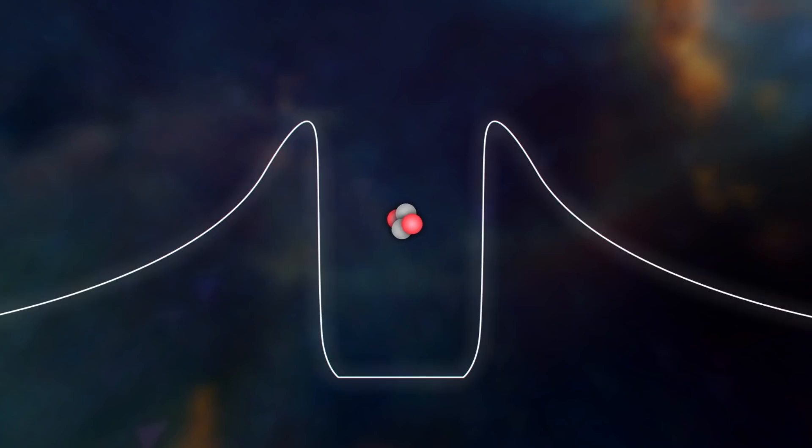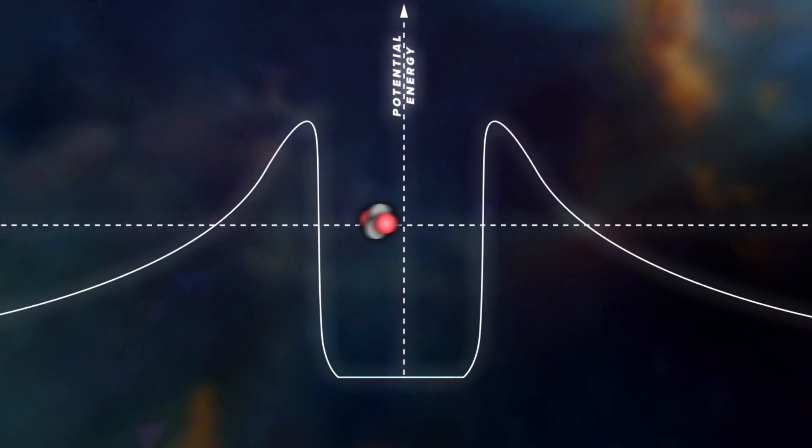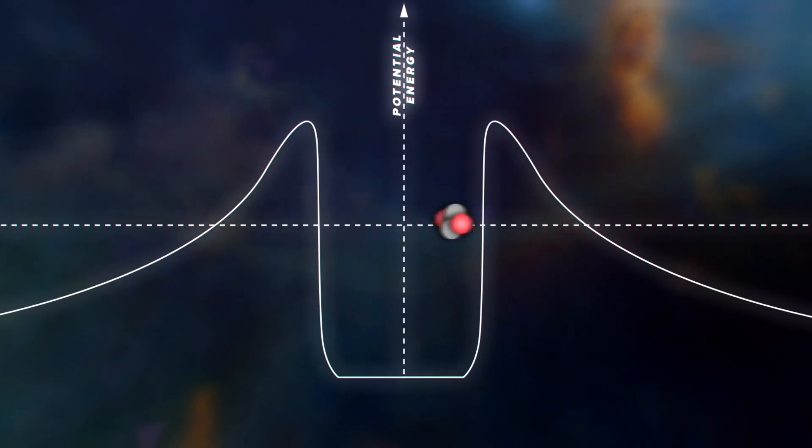There, an alpha particle is snugly bound into the nucleus by the strong nuclear force. We can imagine an alpha particle as being like a ball trapped in a steep valley of potential energy. It can roll around inside, but unless it has a very large kinetic energy, it will never roll over the edges.